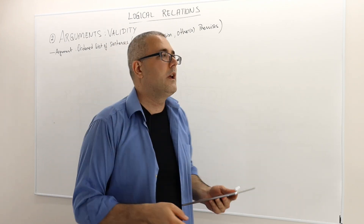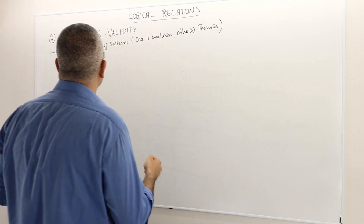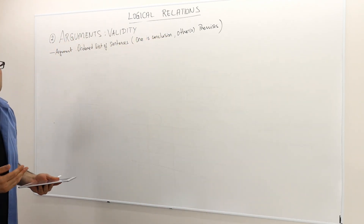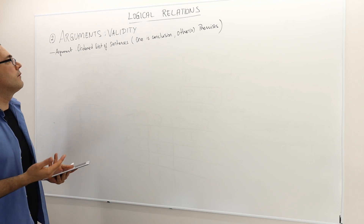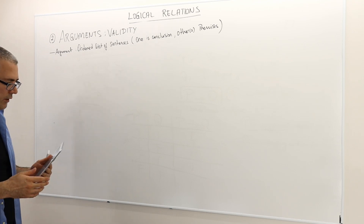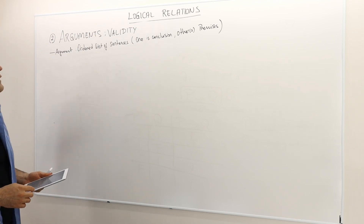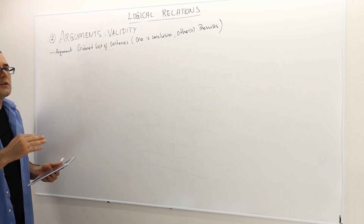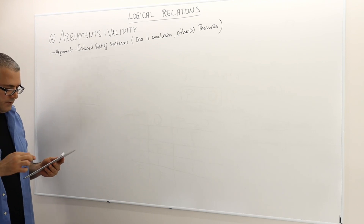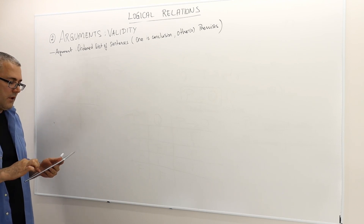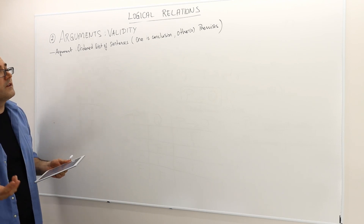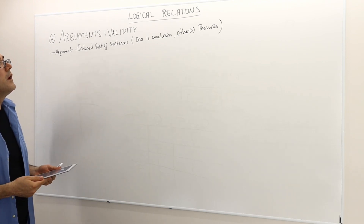This is section two. In this section, we're going to talk about arguments and the validity of arguments. So what is an argument? An argument is an ordered list of sentences, so it must have more than one sentence.